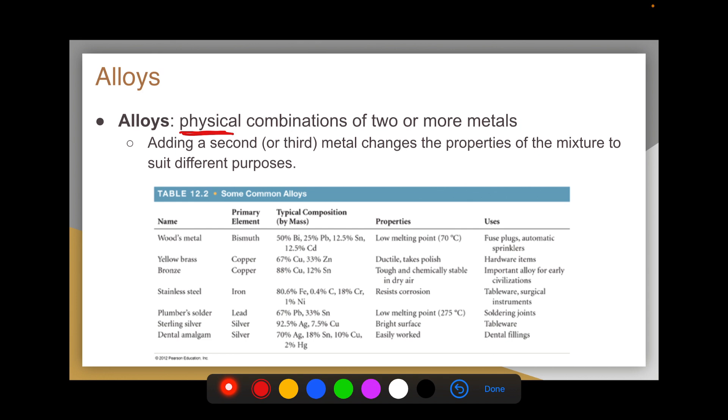Why do we create alloys? Well, adding a second or sometimes a third or even a fourth metal can change the properties of the mixture to suit a particular purpose.